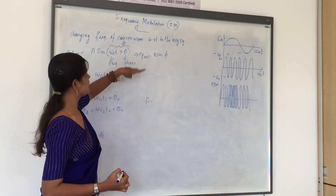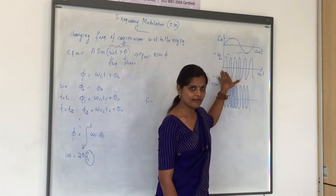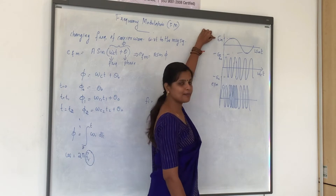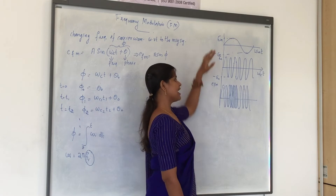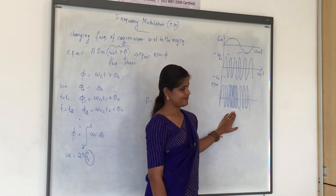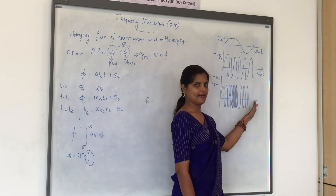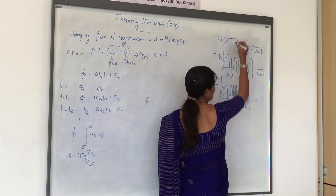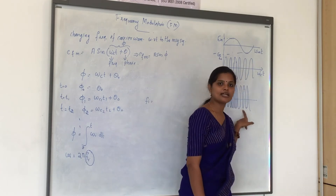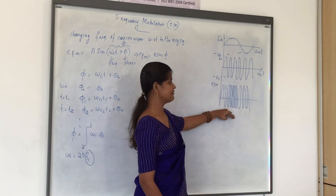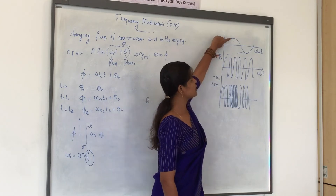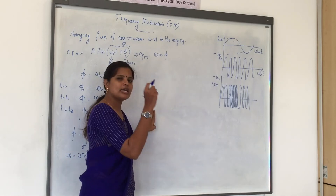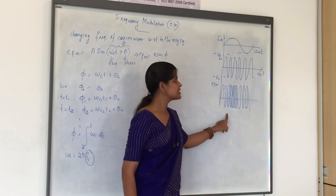In frequency modulation, the frequency of the carrier wave varies according to the message signal. As seen with AM, we draw a message signal with peak amplitude EM and a carrier signal with peak amplitude EC. In the FM output signal, the amplitude is constant while the frequency varies. During the positive half cycle the frequency increases, and during the negative half cycle the frequency decreases. So the frequency of the carrier wave changes according to the message signal, and at any instant it is purely dependent on the message signal.